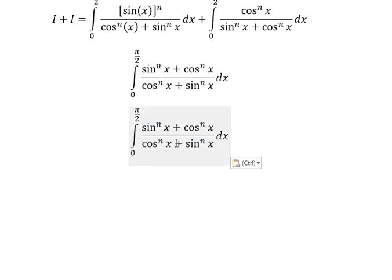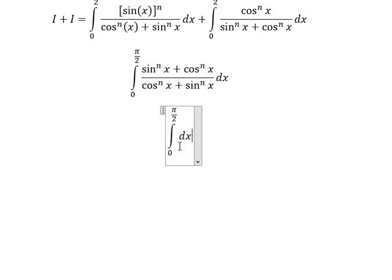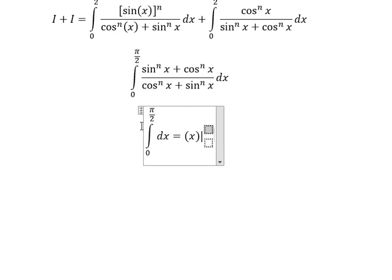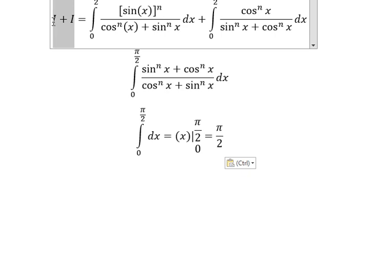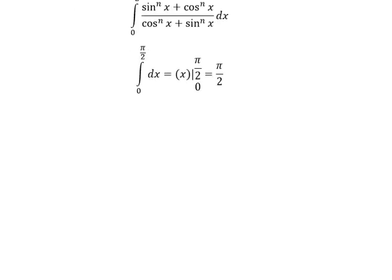Next, this one divide this one you got about 1, and now you got dx. So we got π/2 and 0 in here. So we got π/2, but in here we have 2I, so 2I equal to π/2. So we can find the value of I in here that's π/4.